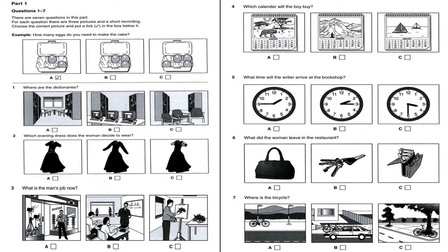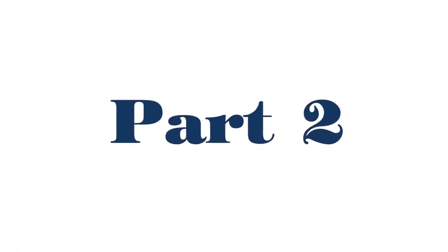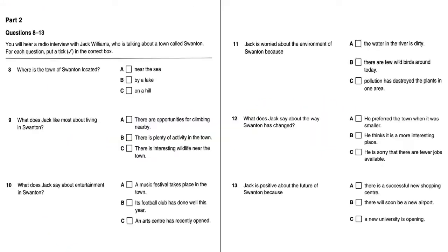That is the end of part one. Now turn to part two. Questions eight to thirteen. You will hear a radio interview with Jack Williams, who is talking about a town called Swanton. For each question, put a tick in the correct box. You now have forty-five seconds to look at the questions for part two.